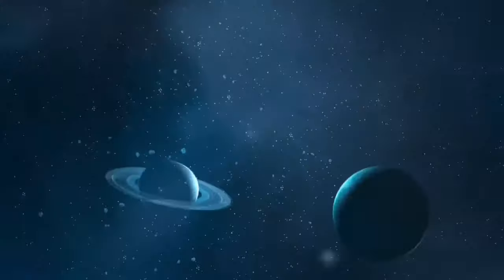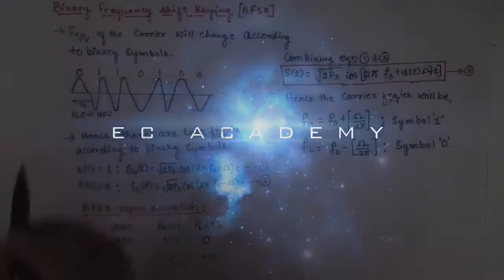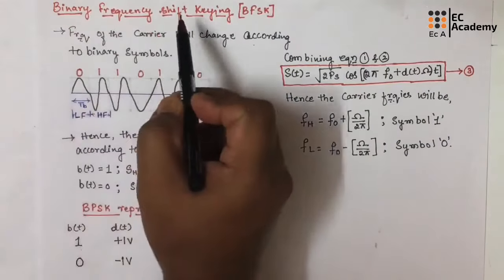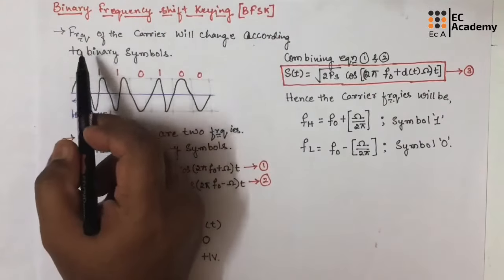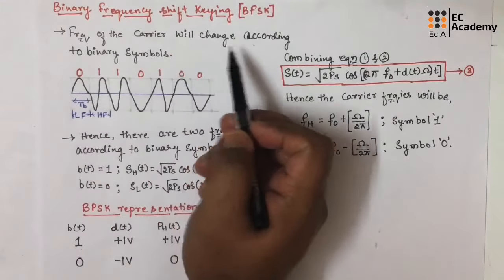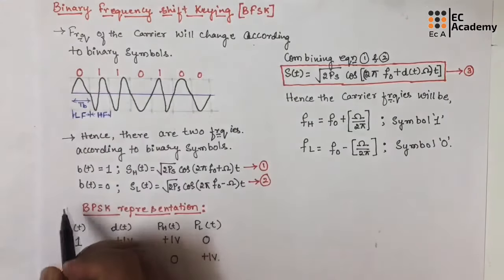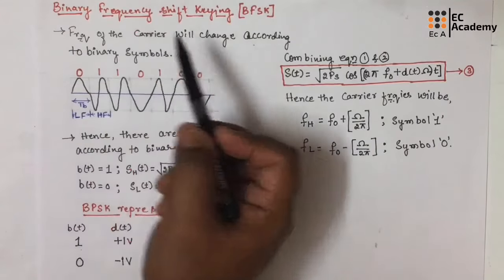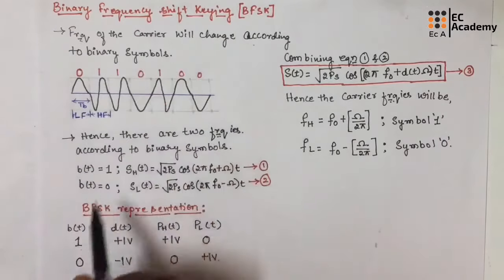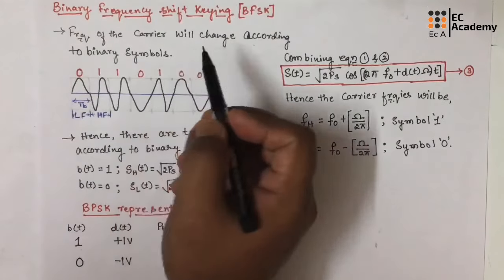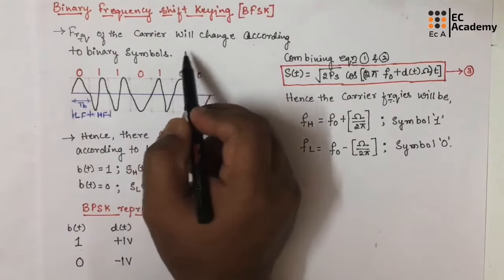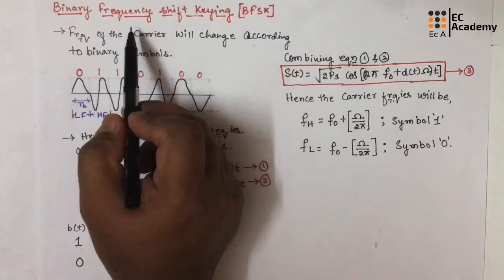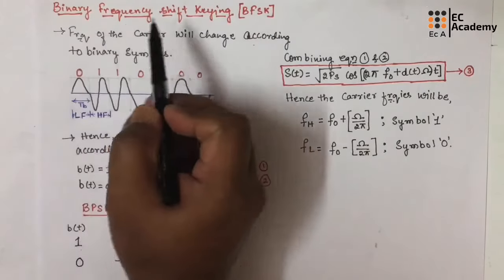Hello friends, welcome to ESEA Academy. In this lecture, let us understand binary frequency shift keying, which is BFSK. In this type of modulation, the frequency of the carrier will change according to the binary symbol. The other parameters of the carrier signal like phase and amplitude will not vary. Only the frequency of the carrier signal will vary. Such type of modulation is known as binary frequency shift keying.